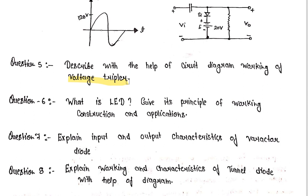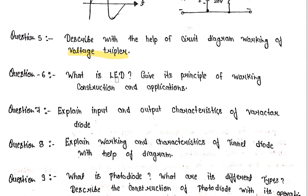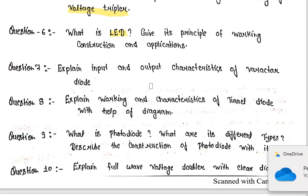Also see the voltage multiplier/tripler circuit diagram. LED is an important question — it came for 7 marks and last year it came for 10 marks. For LED, study principle of working, construction, and applications.